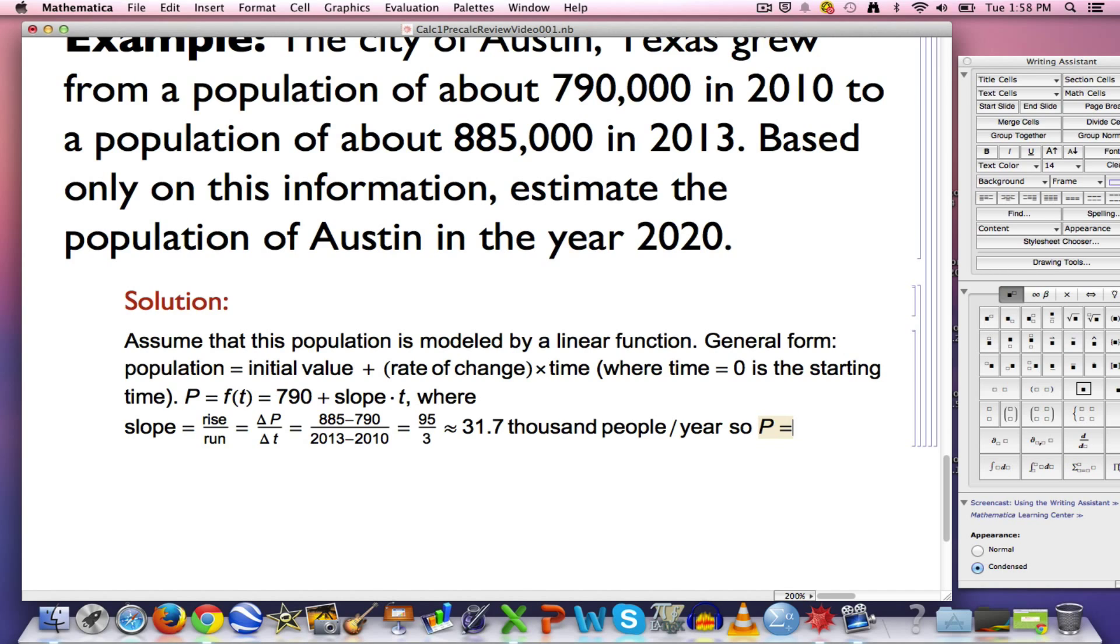So ultimately, the formula here is going to be 790 plus 31.7 times T. This is an approximation. All these numbers are approximate anyway, so it's not a real big deal. There's our linear function to model the situation.